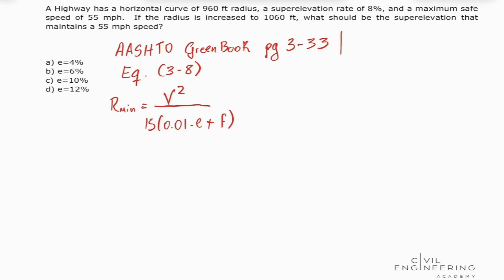So we were given that for the first curve we have radius equals 960 feet and for the second one we're going to have one that is 1060 feet.